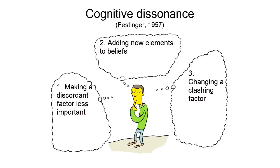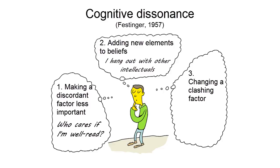So, to avoid cognitive dissonance, Roger could say, 'Well, who cares if I'm well-read — it's not that important,' or 'Not having read one classic hardly makes me illiterate.' Or he could create consonants by adding new elements to his beliefs — for instance, by thinking that, being an intellectual, he obviously hangs out with other well-read intellectuals. It's therefore not surprising that his friends have already read the classic.